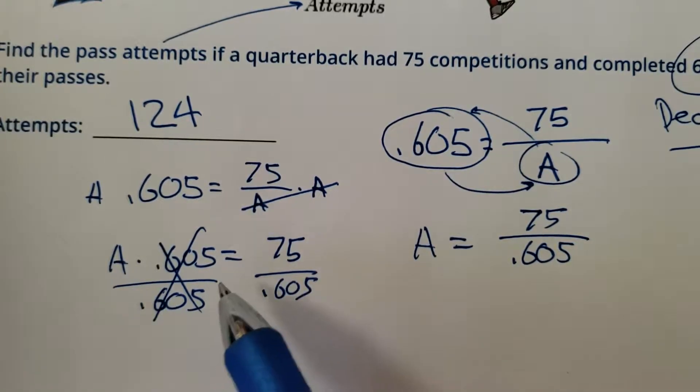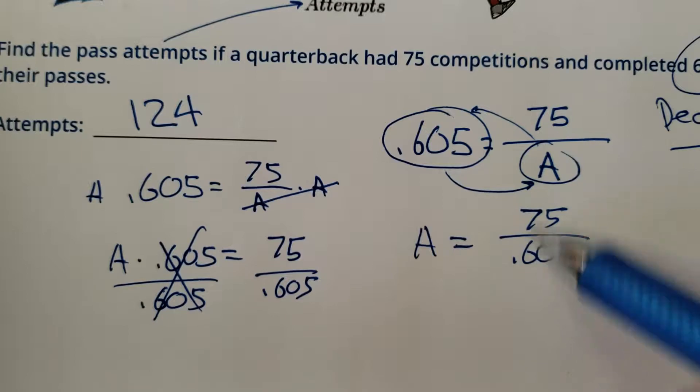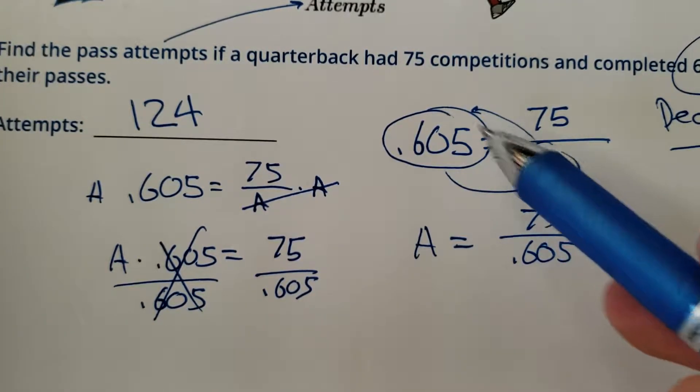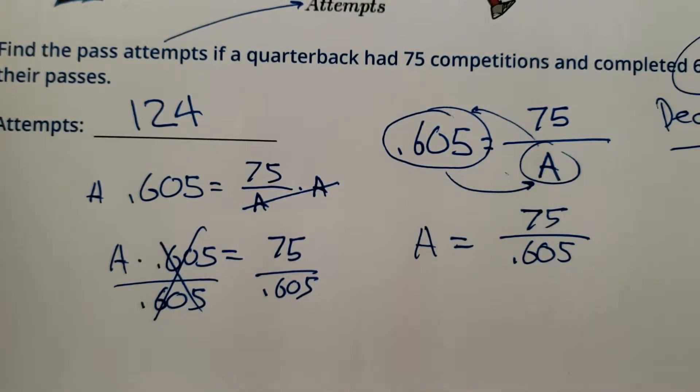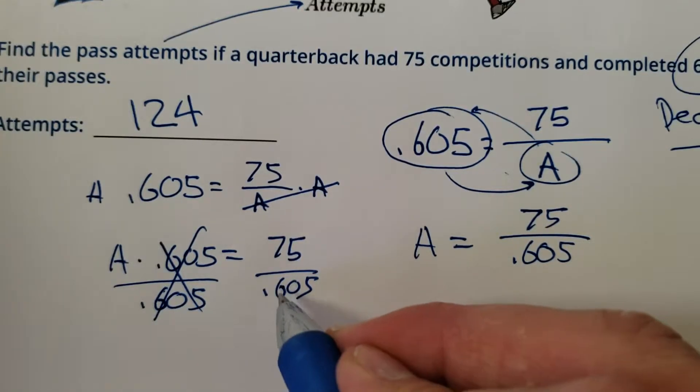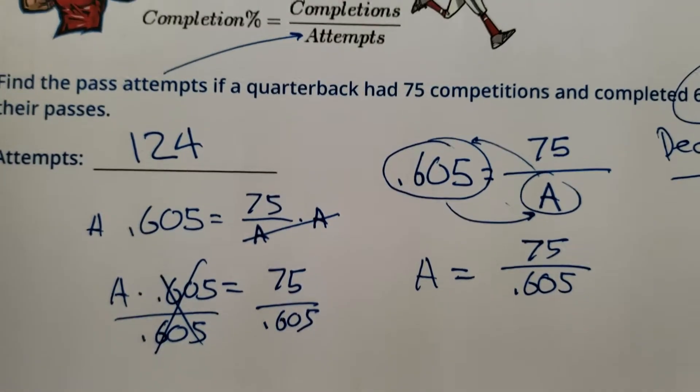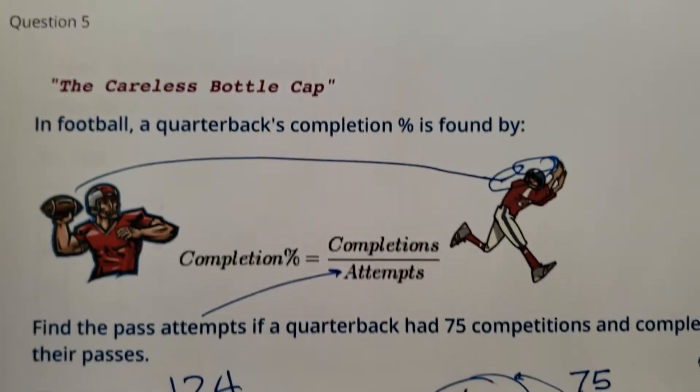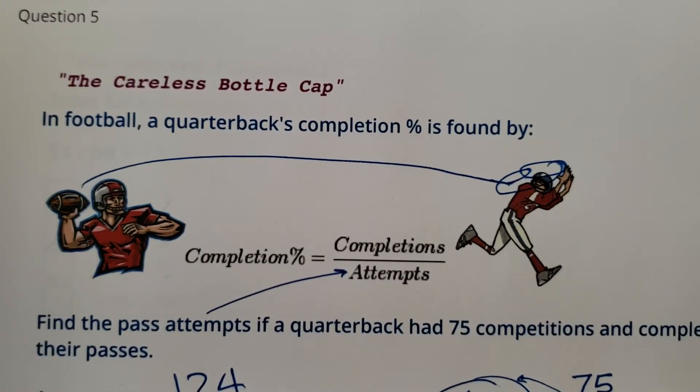You're telling me the final move was to take 75 divided by 0.605? Weird. So solving it the normal way and solving it with the fast, most efficient way gets you the same answer. Cool. So in my opinion, if you can do it the same way and do it faster, sounds like that's the best option to me. That was the Careless Bottle Cap.